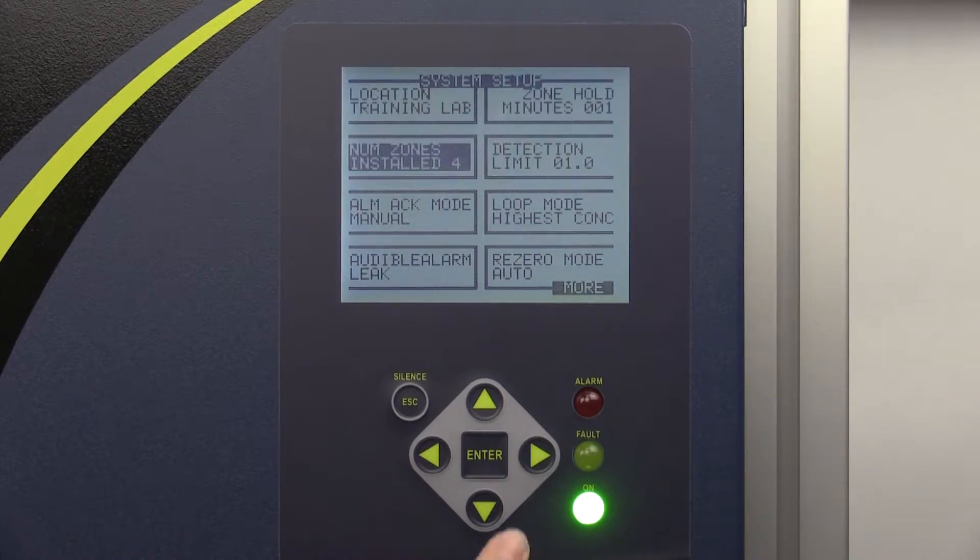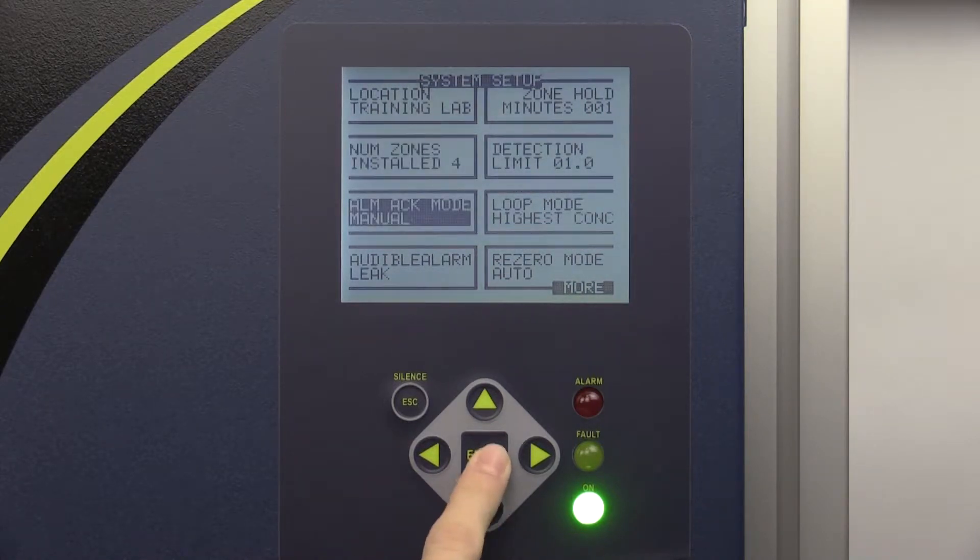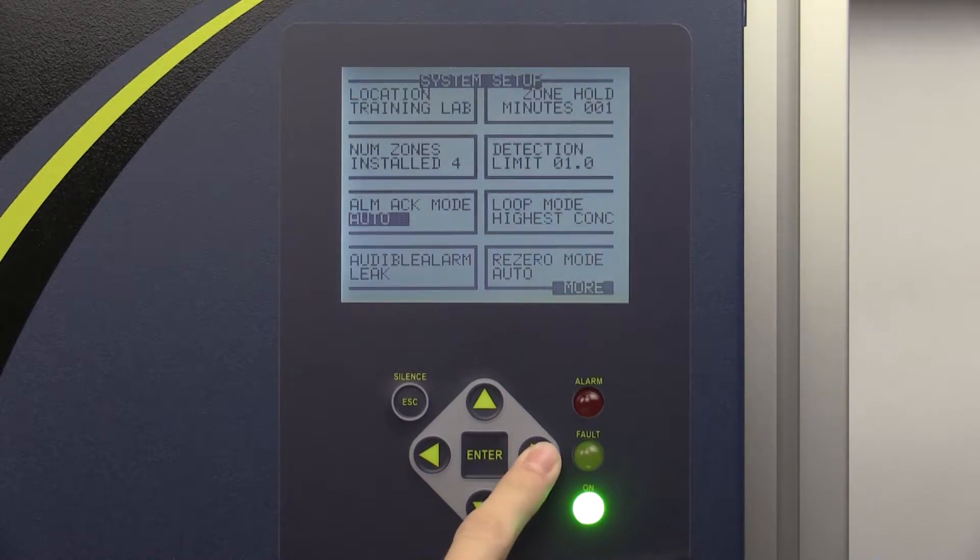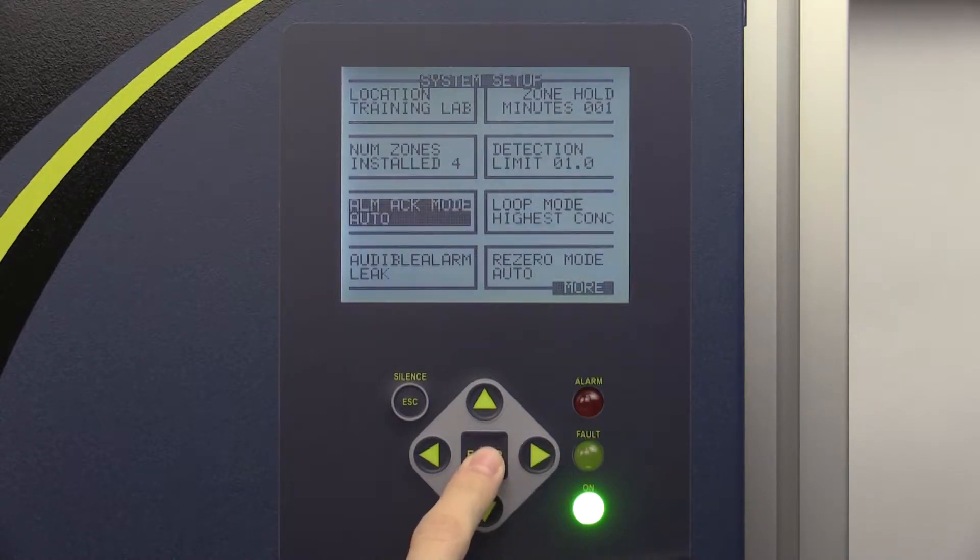Alarm acknowledgement mode has two options. When the auto option is selected, the monitor will automatically acknowledge any triggered alarm. Once an alarm is acknowledged, it will shut off once the PPM reading has fallen back to a safe level at the zone.